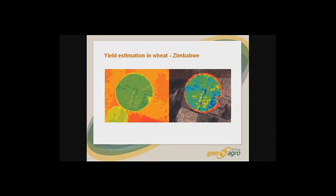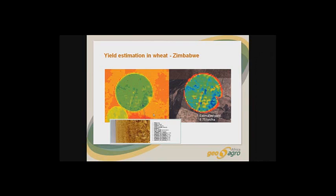In different locations, according to a protocol, they're going to take some samples related with yield measurement. That means number of spikes and amount of grain, and based on the seed weights, we can correlate those parameters with actual estimated yields.